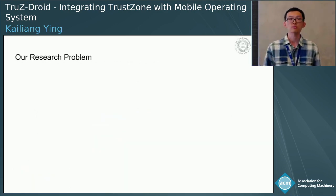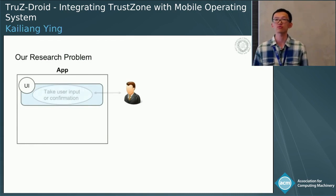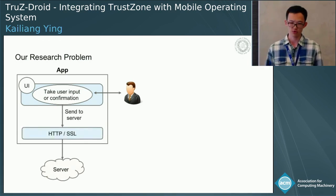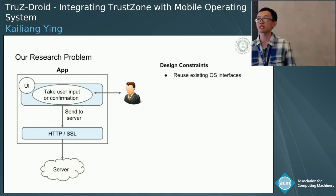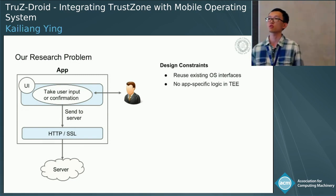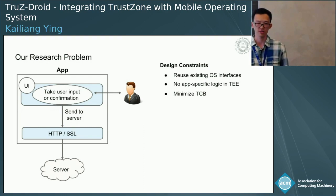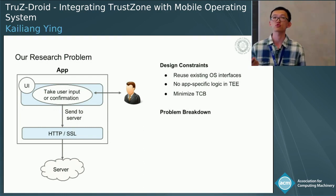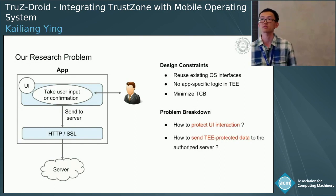Coming to our research problem: we summarize the previous use cases into the following model. An app takes user input and confirmation through the UI, then to send to the server it goes through existing network protocols like HTTP and SSL. To protect such use cases we have high-level design constraints: first, apps should use existing OS interfaces to send traffic; second, no application-specific logic should be deployed inside TrustZone; and third, we want to minimize the TCB. Our problem is divided into two parts: how to protect UI interaction, and how to protect server communication.